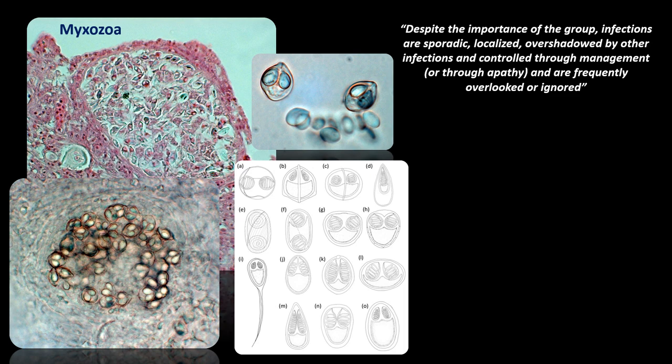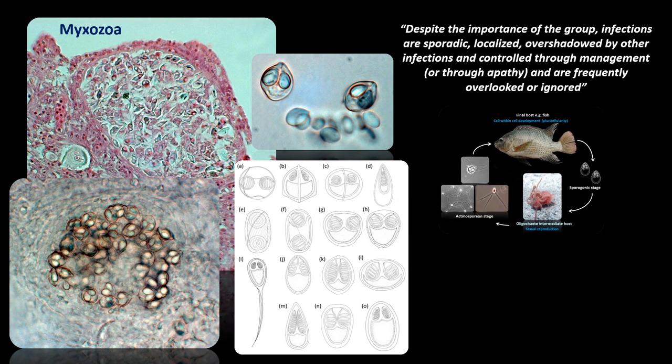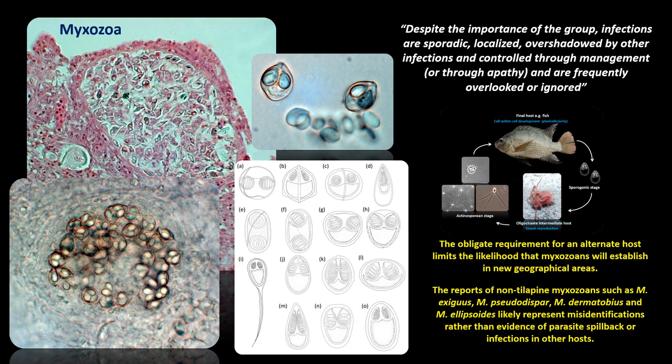Jumping forward to the mixozoans, one co-author on this paper says that despite the importance of the group, infections are sporadic, localised, or are frequently overshadowed by other infections and are controlled either by management or by apathy — and sadly, they are frequently overlooked or ignored. This is the typical life cycle of a myxosporian. Their requirement for specific intermediate hosts like certain oligochaetes may limit the likelihood of these establishing in new areas, so records outside Africa may represent misidentifications rather than established infections.